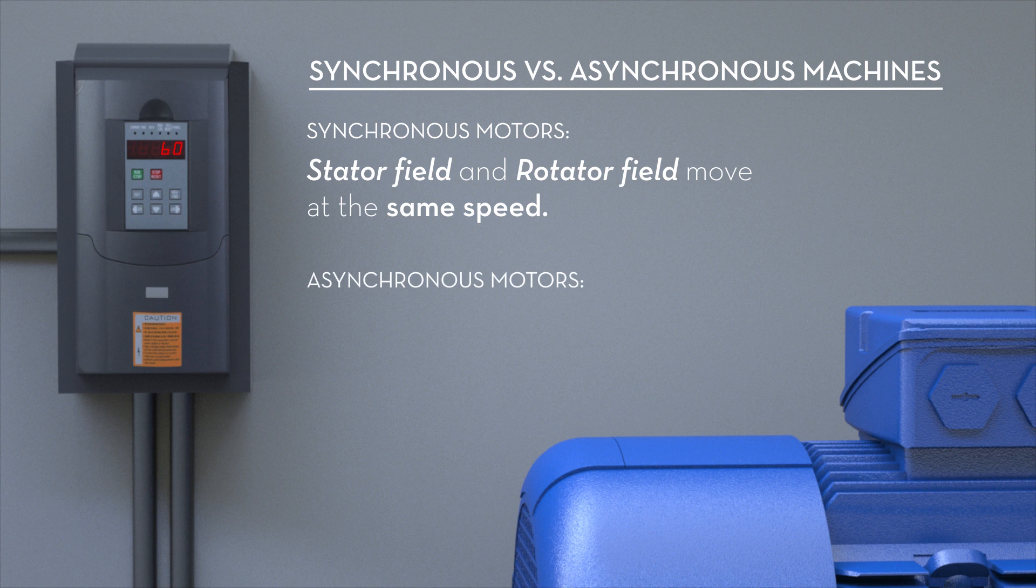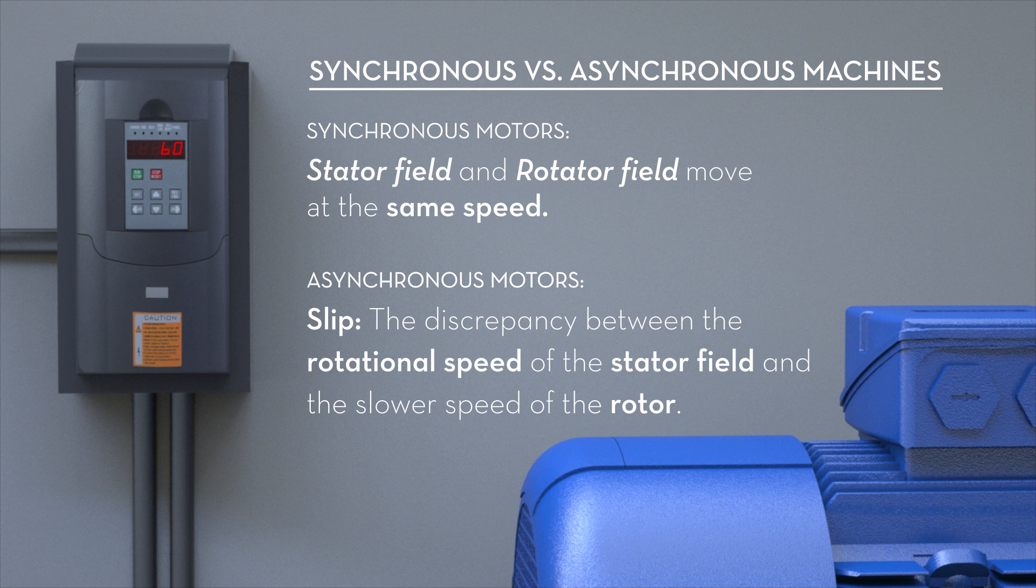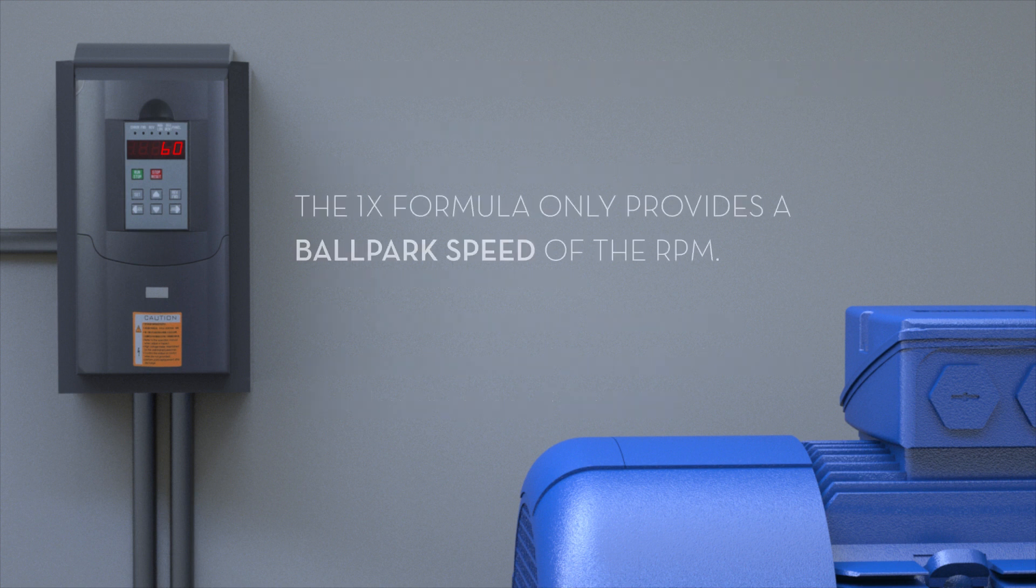Asynchronous, or induction motors, have slip, which is the discrepancy between the rotational speed of the stator field and the somewhat slower speed of the rotor. This means that the 1x formula only provides a ballpark speed of the VFD's RPM.